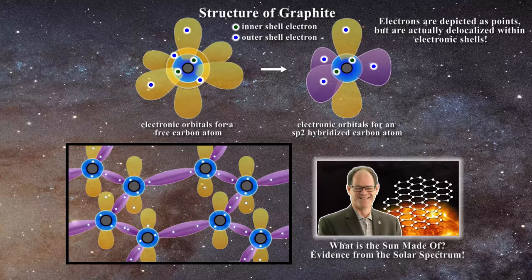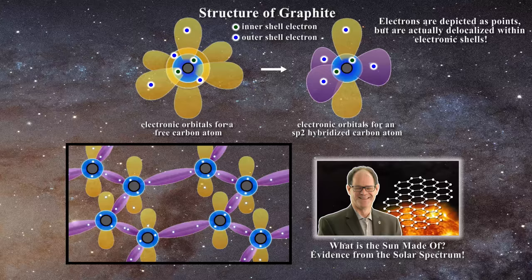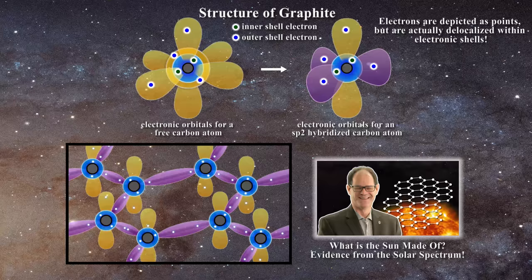Three of these enter the sp2 hybridized orbitals and make a sigma bond with other carbon atoms in the lattice. The remaining outer shell electron stays in an unhybridized p orbital.